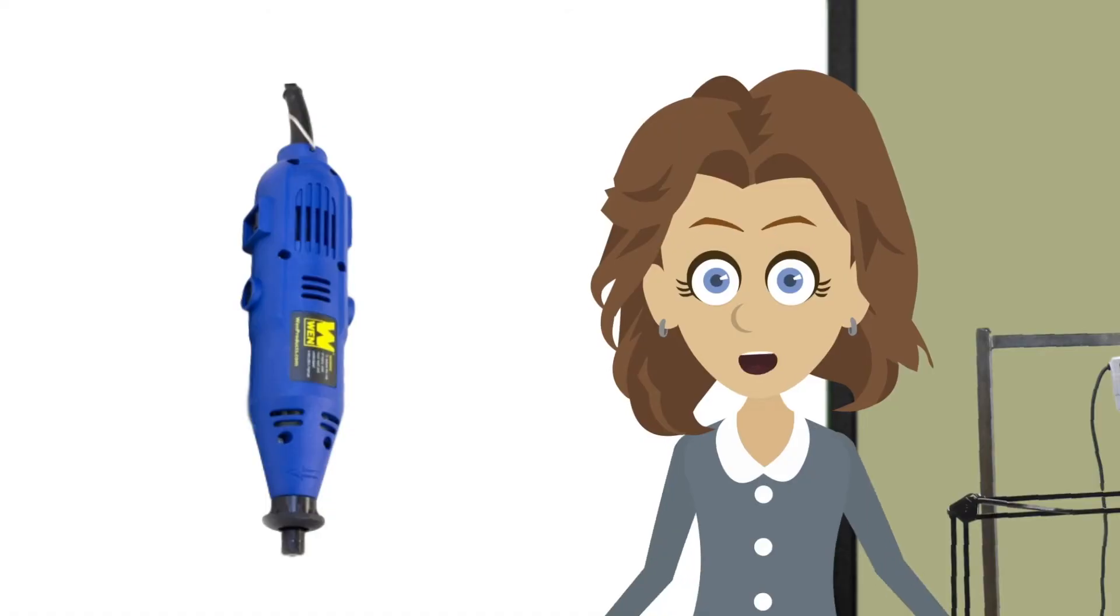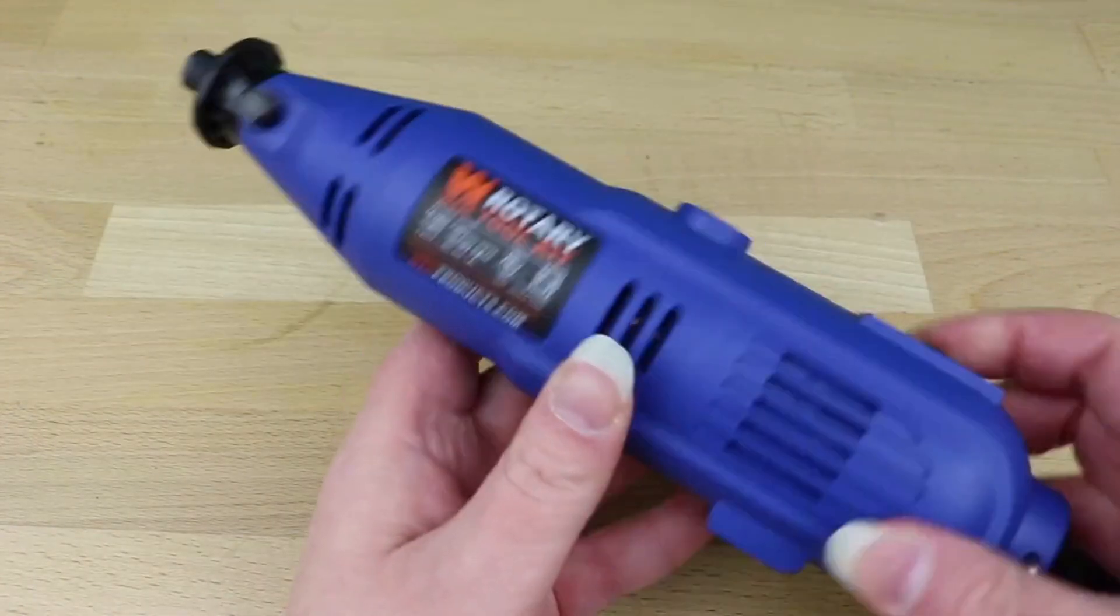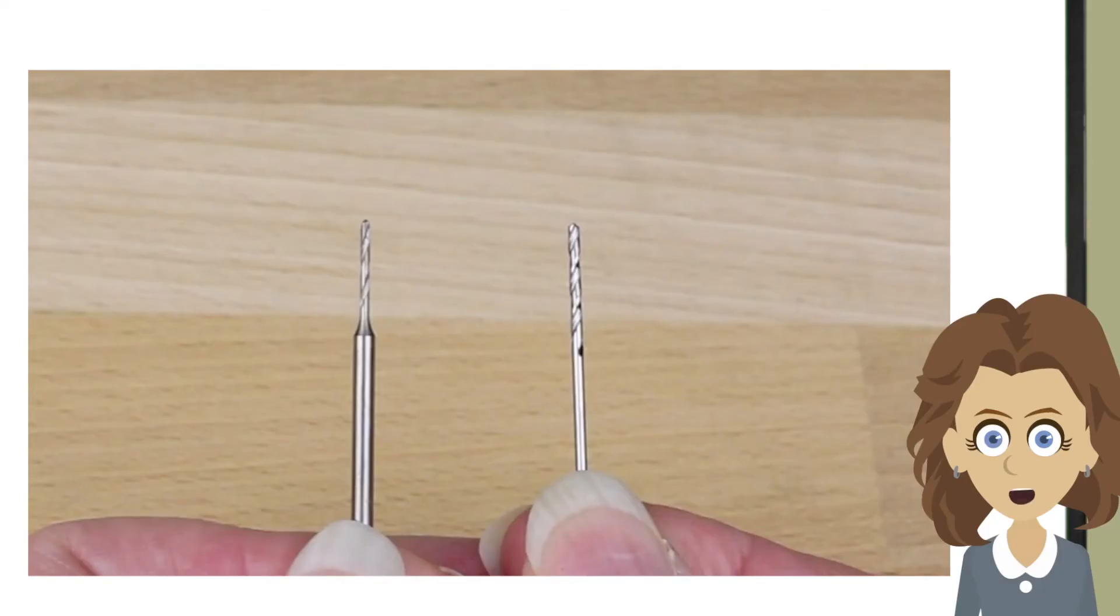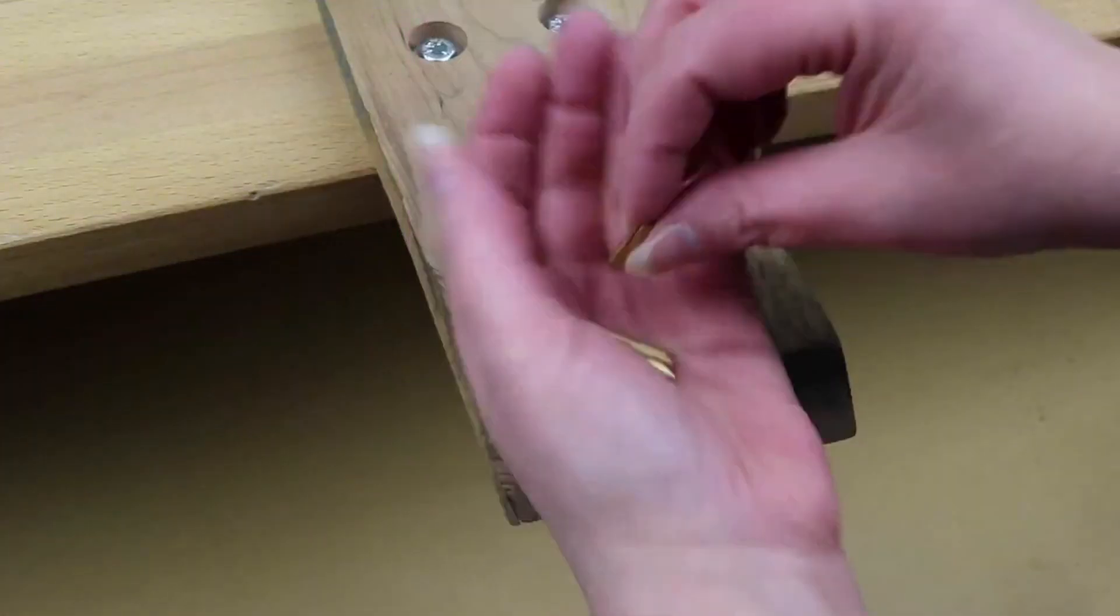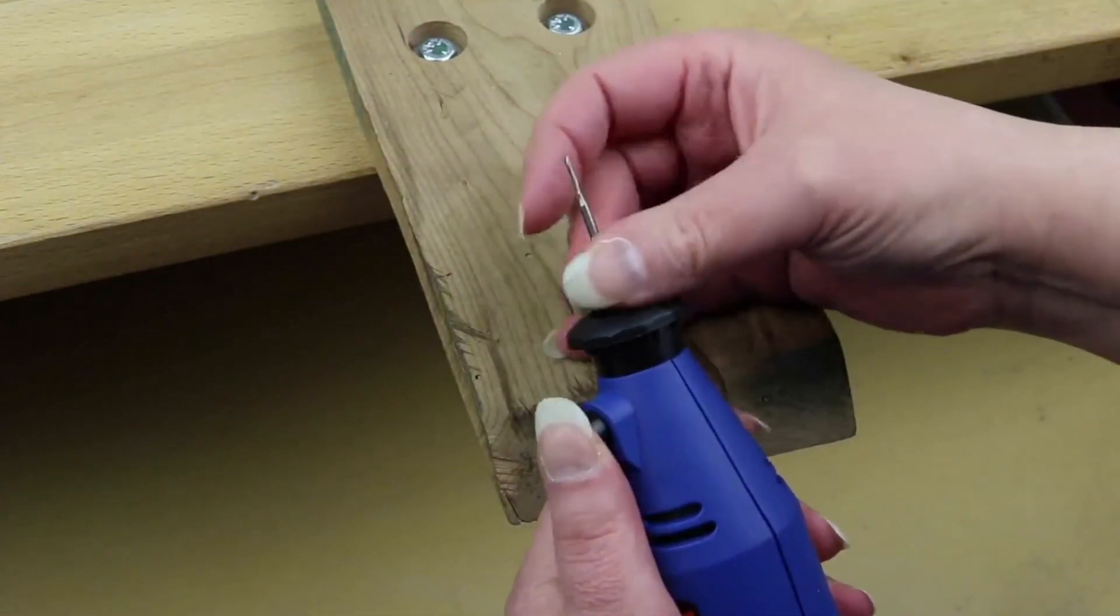A handheld Dremel-like rotary tool will come with a selection of collets and an on and off switch with a few power settings to choose from. Because the collets are a specific size, regular drill bits will not work. You'll need to get a drill bit with a tapered mandrel. Find the collet which fits your drill bit and tighten the collet.